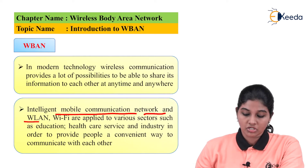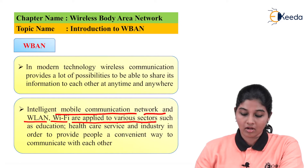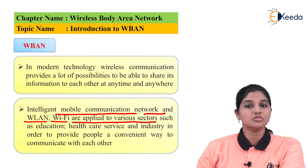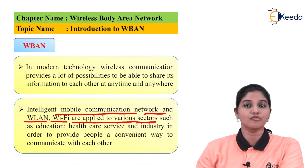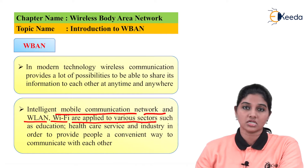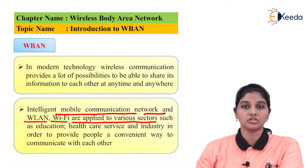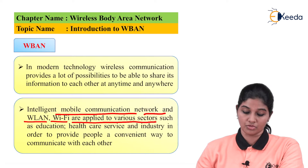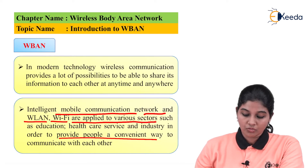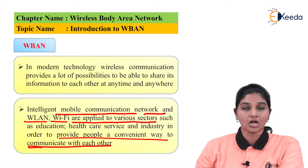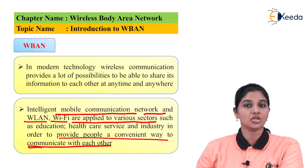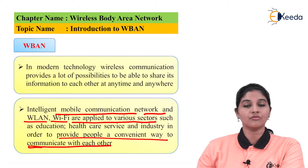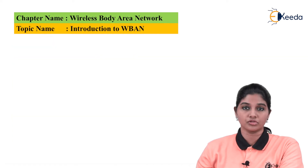Intelligent mobile communication networks and wireless LAN Wi-Fi are applied to various sectors. We can use a wireless network in the form of wireless LAN or Wi-Fi in various sectors which include medical and healthcare, industrial, and education sectors. In all these areas wireless communication plays an important role, providing a convenient way for people to communicate and exchange data. The main aim of data exchange is to share ideas and information so that it can be transmitted all over the world.